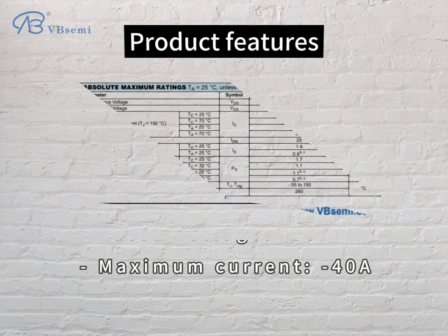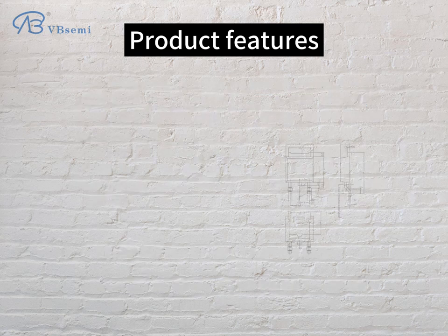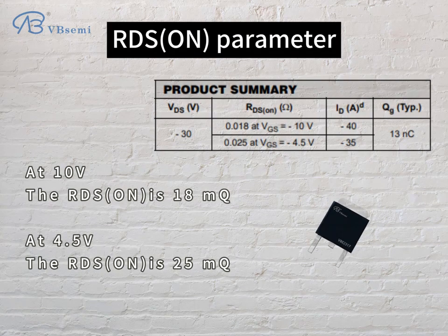Product features: rated voltage -30V, maximum current -40A, gate voltage VGS ±20V, threshold voltage VTH -1.7V. RDS(on) parameter: at 10V the RDS(on) is 18mΩ, at 4.5V the RDS(on) is 25mΩ.